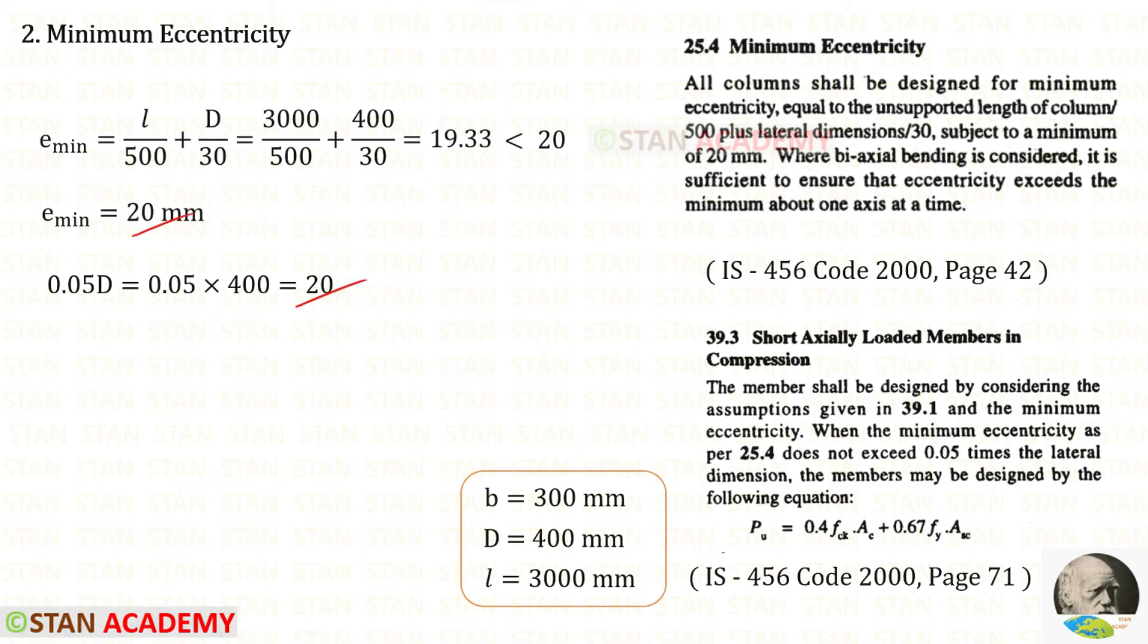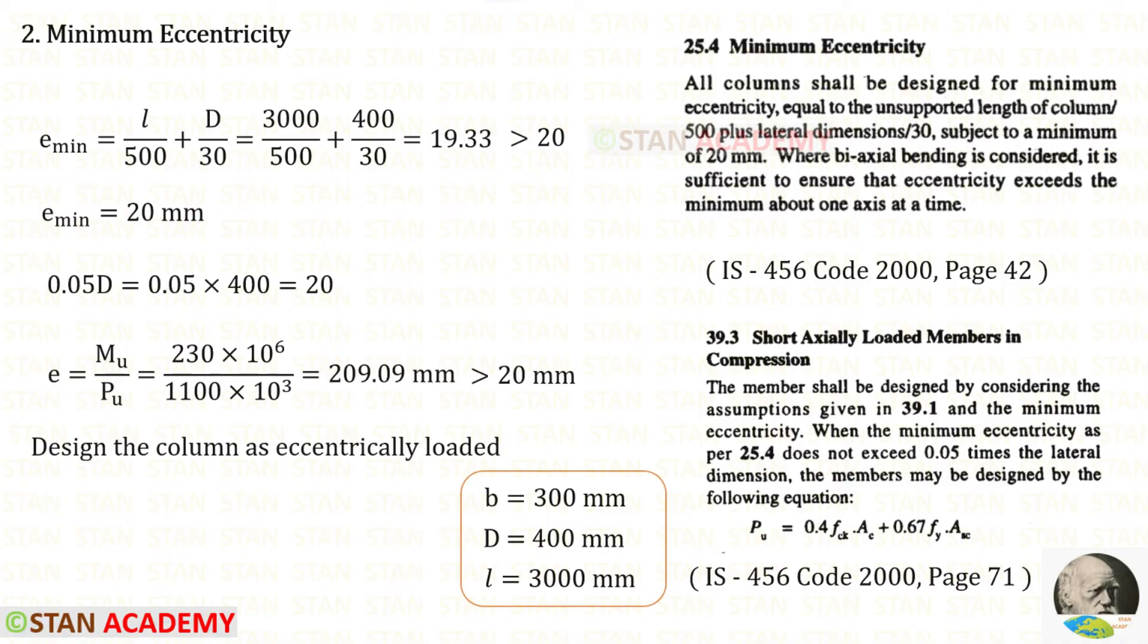But the moment is given in the question, so we have to check one more time. Mu upon Pu, we will get 209.09 which is more than 20. So we have to design the column as eccentrically loaded.